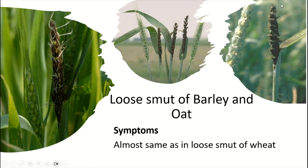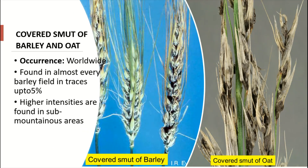Next is loose smut of barley and oats, which have the same symptoms as loose smut of wheat. The covered smut of barley and oats occurs worldwide and is found in almost every barley field in traces, up to five percent. Higher intensities are found in sub-mountainous areas.